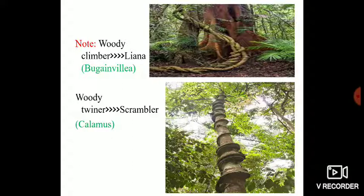An important note to remember: if you have a climber that is not green or herbaceous but is woody, that climber is specifically named a liana. So if you are asked in the examination what a liana is, you will say that it is a woody climber. An example is Bougainvillea.